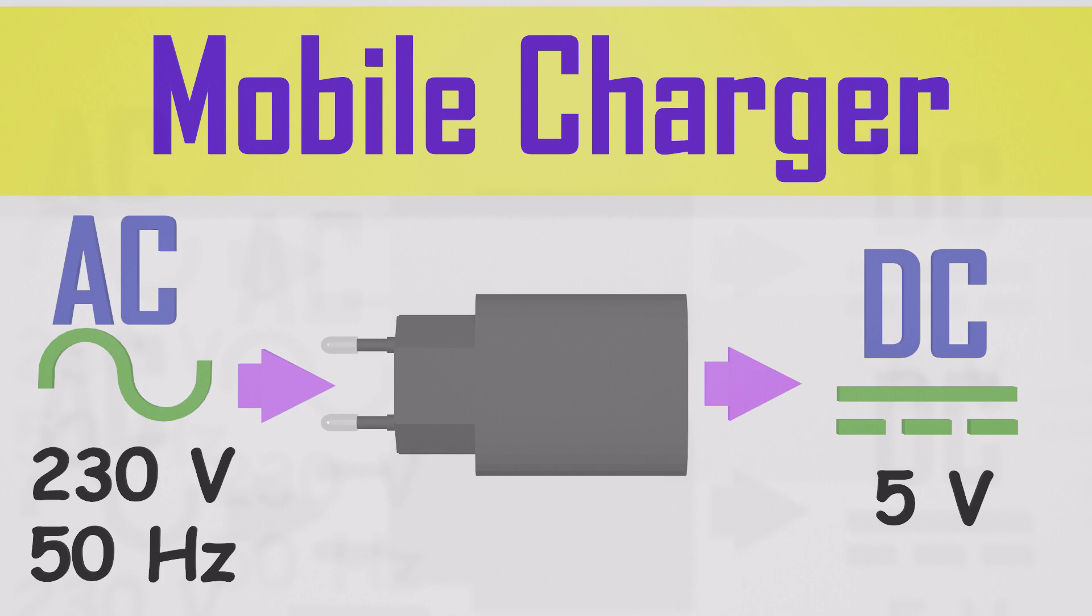The mobile phone charger converts AC mains to 5 volts stable voltage for charging the cell phone. How does that small charger produce 5 VDC from our 220 VAC main power supply?